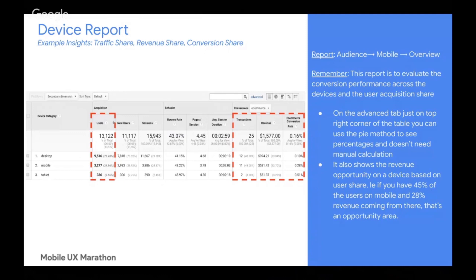The insights we can look at in this report, as you see on the screen, are traffic share, revenue share, and conversion share. It also shows the revenue opportunity. For example, if you have 45% of your users on mobile but only 20-28% of revenue attributed to those users, that's an opportunity gap. It helps you build a mobile first or complementary mobile strategy.